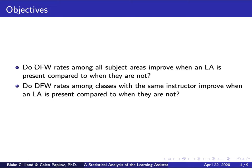The questions we want to answer are: do DFW rates among all subject areas improve when an LA is present? DFW rates refer to students who receive a D, F, or withdraw — essentially everyone who did not pass the class. We also ask: do DFW rates among classes with the same instructor improve when an LA is present compared to when they're not?